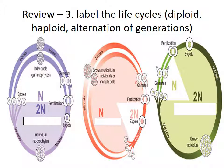Go ahead and pause to look at the diagrams and try to label the life cycles. In the first picture — the purple picture — we've got a multicellular haploid stage and a multicellular diploid stage, so that's alternation of generations. In the second picture, most of the organism is haploid (that's what the big N stands for) and only the zygote is diploid, so that's the haploid life cycle. In the other one, most of the organism is diploid with just a small haploid part, so that's the diploid life cycle. The order is: alternation of generations, haploid, and then diploid.